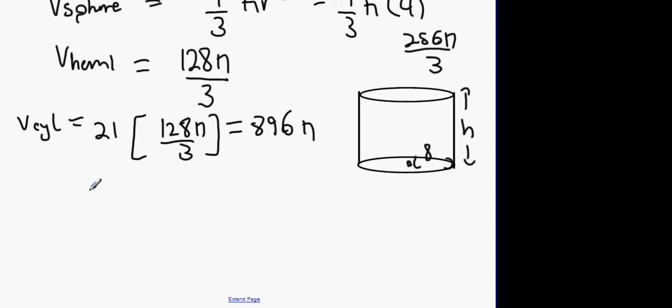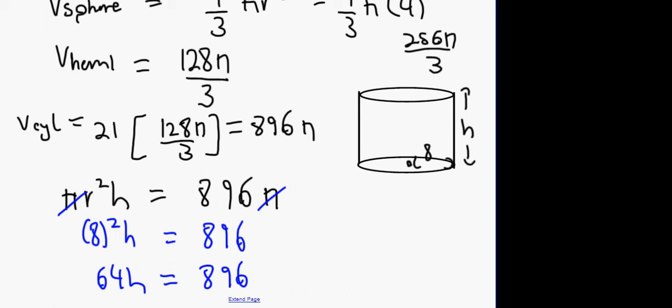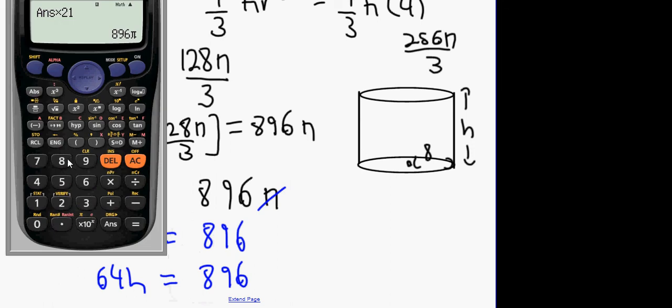Now this equals the volume of the cylinder, correct? What's the formula for the volume of a cylinder? π r squared h equals 896 π. What happens to both sides is the π's will cancel. The radius is 8 squared. 8 squared h equals 896. 64h equals 896. 896 divided by 64, what is it?